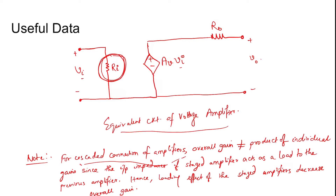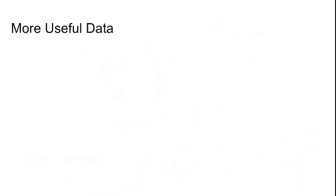When cascaded amplifiers are connected, the input impedance of the next stage becomes a load on the output of the previous stage, which tends to decrease the overall gain. So the product of the individual gains is not the overall gain — it is not correct. Hence, the loading effect of staged amplifiers decreases the overall gain.